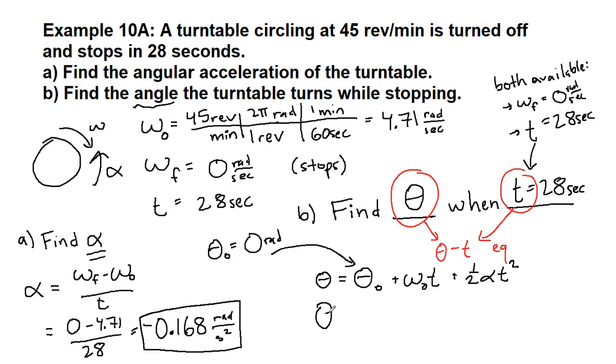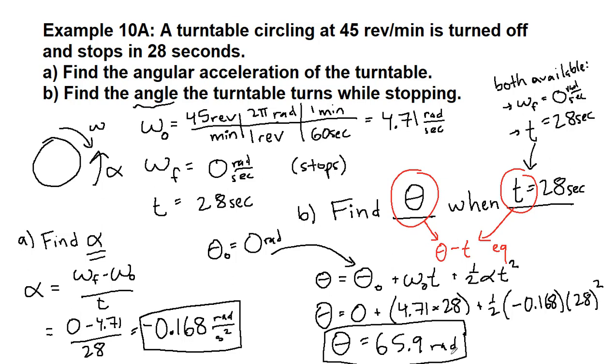So the theta value that we're looking for is zero plus our omega initial from up top, 4.71 times 28, plus 1 half. Our alpha here, the angular acceleration, is negative 0.168, and our time here is 28. We square that. Don't forget to square that. We can plug all that into our calculator to get our final number answer of 65.9 radians or 66 radians, also good.